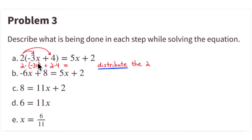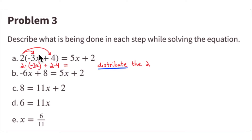Going back to the top: the first step is to distribute the 2. Remember to multiply each term by 2. It's as if you have two groups — in each group you see a -3x, so 2 times -3x is -6x. In each group there are four items, so 2 times 4 is 8. You're left with 5x + 2 on the right side. The first step is to get rid of the parentheses by distributing.